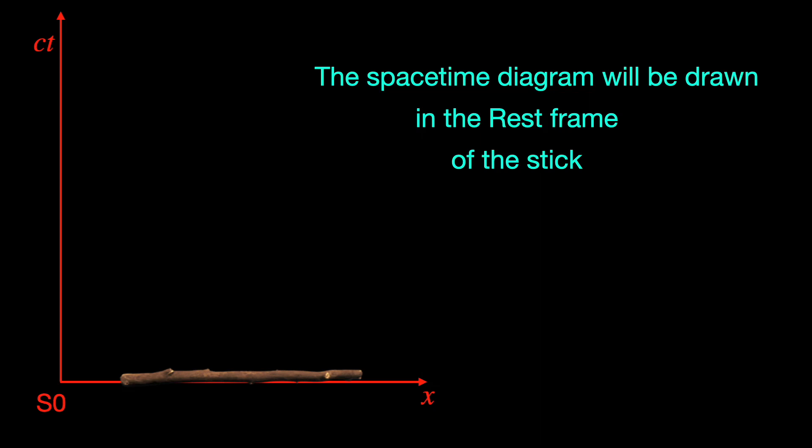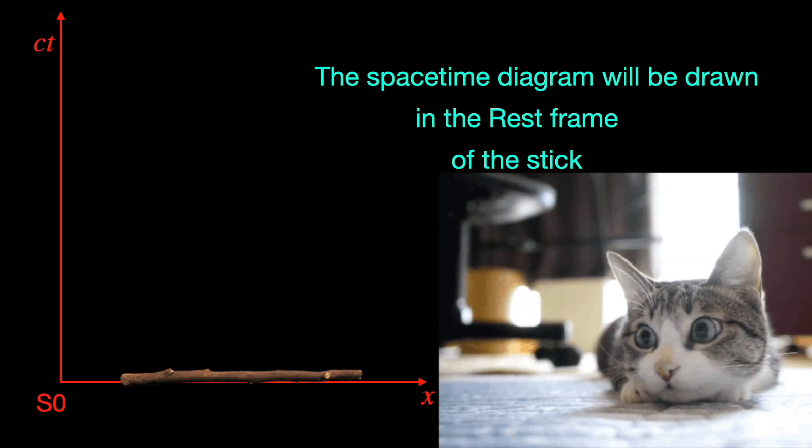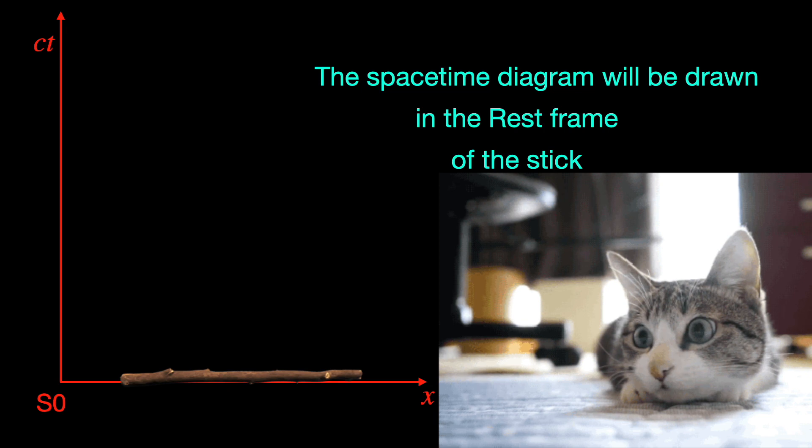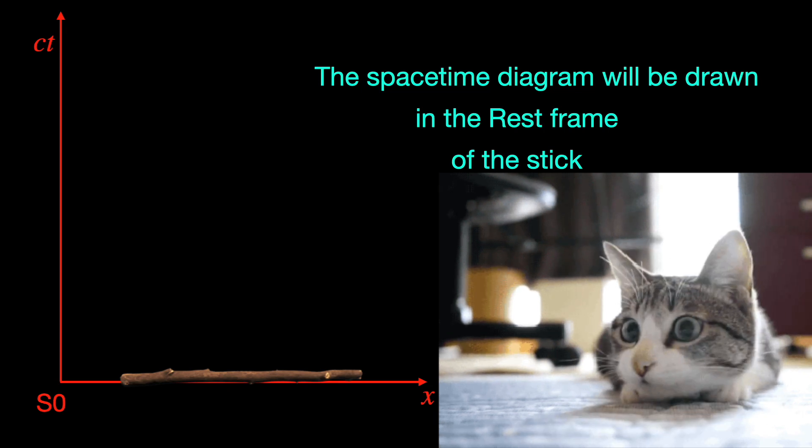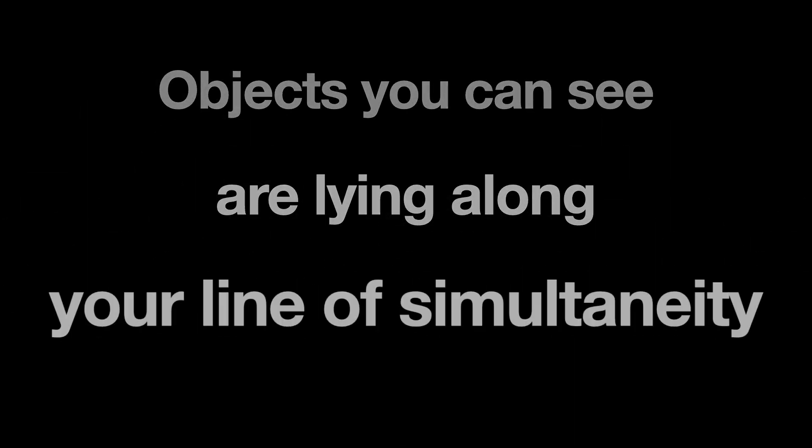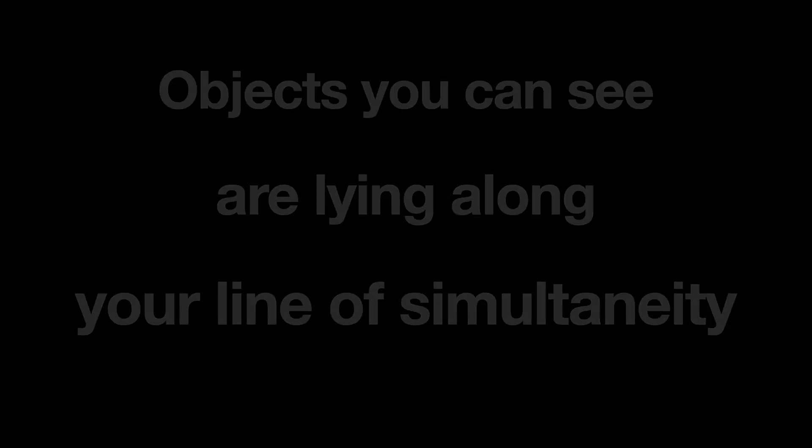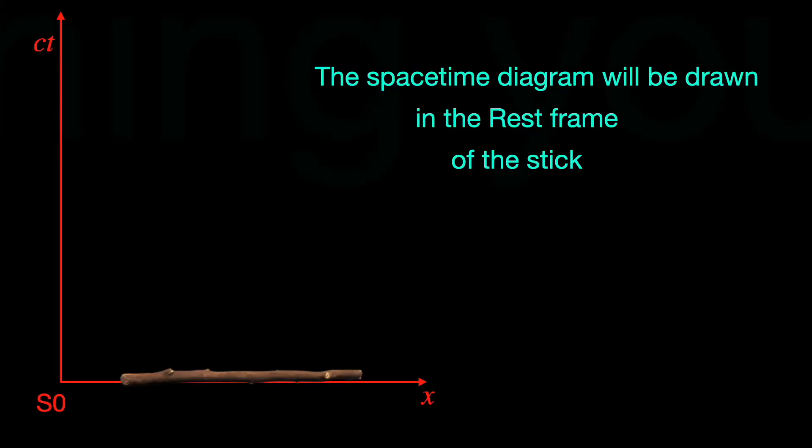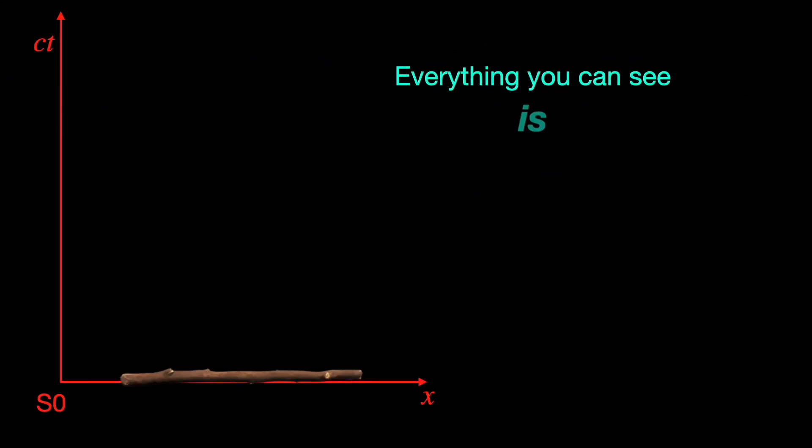Why? Because when observers in any inertial frame look at the stick they are observing all parts of the stick simultaneously right? So the stick appears parallel to their line of simultaneity which is nothing but their respective space axis. Think about it, everything you see around you right now all of it must be around the spatial direction of your frame right? Otherwise how are you seeing it as a whole in this instant?